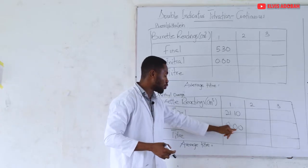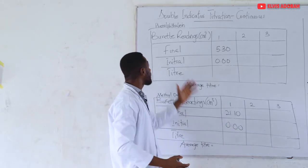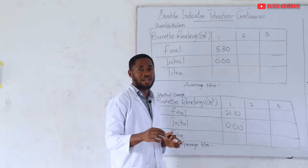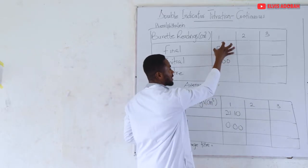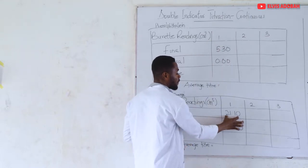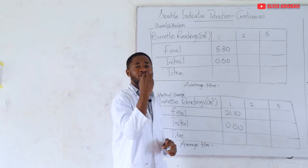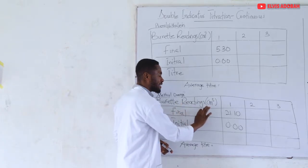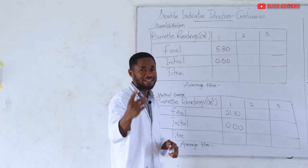I'm preferring to use 0.00 as the initial for both phenolphthalein and methyl orange titrations. When doing my calculation, I'll subtract the titre value from the phenolphthalein titration from that of the methyl orange titration, in order to get the average volume of acid needed to neutralize the base using methyl orange as my indicator.